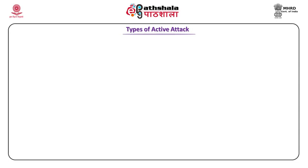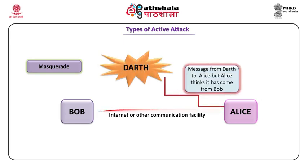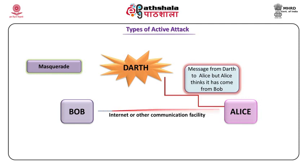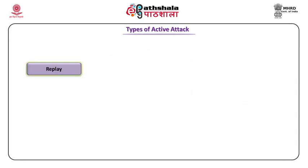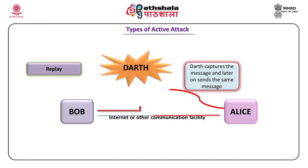The second type of attack is the active attack. The first active attack is masquerade. Bob is communicating with Alice through the internet, but then a message is sent from Darth to Alice. Alice thinks it has come from Bob. Darth has worn a mask of Bob, pretending to be Bob, and Alice is under the misconception that she got a message from Bob when it actually came from Darth. The second is replay attack: Bob sends a message to Alice, Darth captures the message, and after some time replays this message. That is called a replay attack.